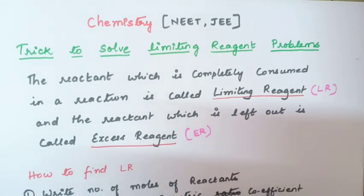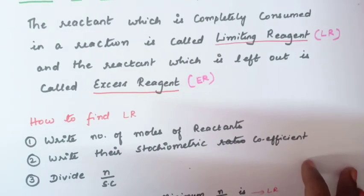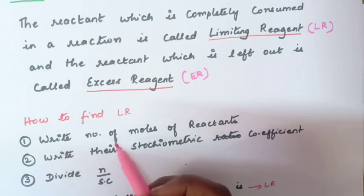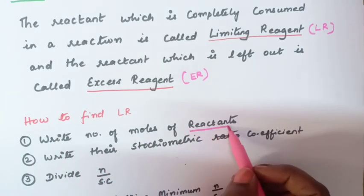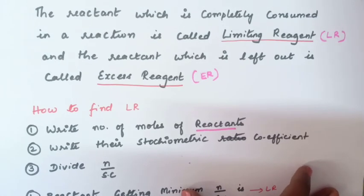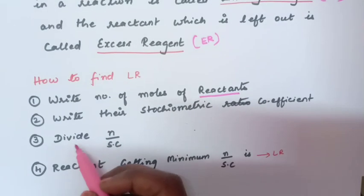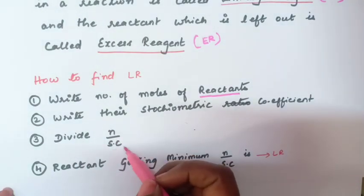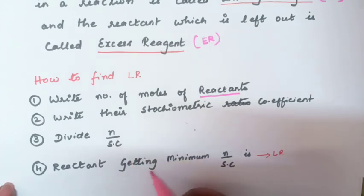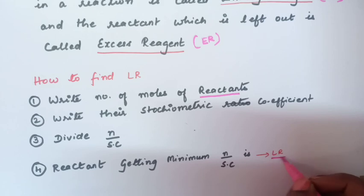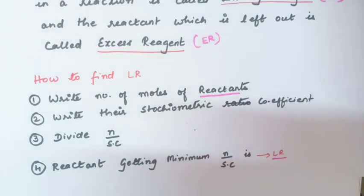Now, how to find limiting reagent in a reaction. There are four steps: Step 1 — write the number of moles of the reactants. Step 2 — write their stoichiometric coefficient. Step 3 — divide number of moles by stoichiometric coefficient. Step 4 — the reactant getting the minimum N divided by SC (number of moles by stoichiometric coefficient) is called the limiting reagent.